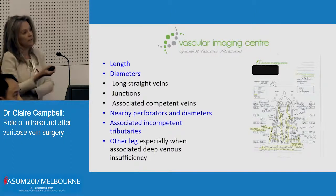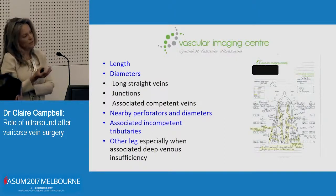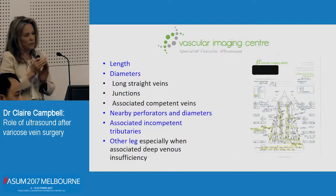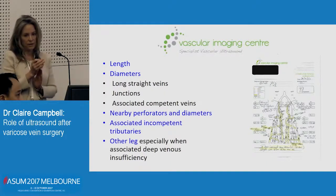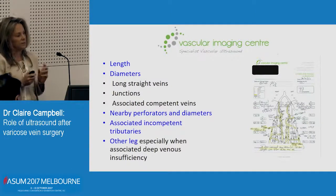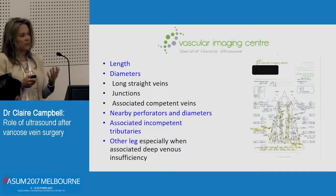We need to know the length of the incompetent trunk veins, the diameters of the long straight veins, the diameters of the junctions and associated competent veins. For instance, we might have incompetent above-knee or below-knee great saphenous. You want to know whether you're going to treat the whole length or just the incompetent segments. If the competent vein is actually much larger on one side than the other, you can fairly predict it's going to become incompetent with time, so then I'll treat the whole length.